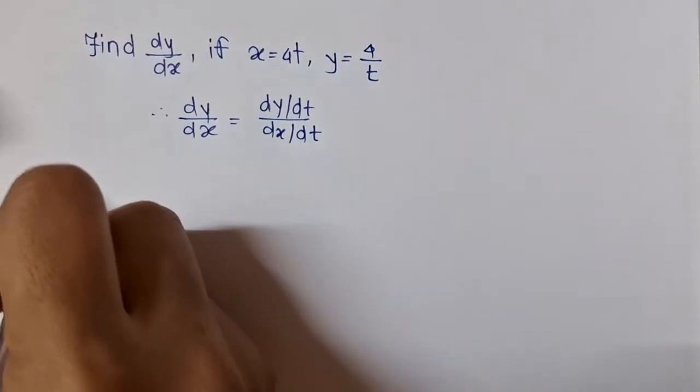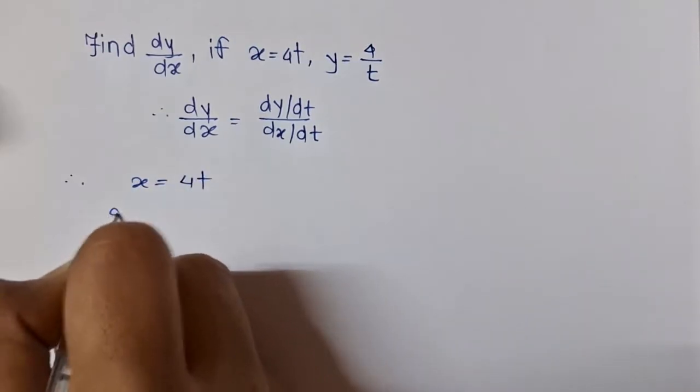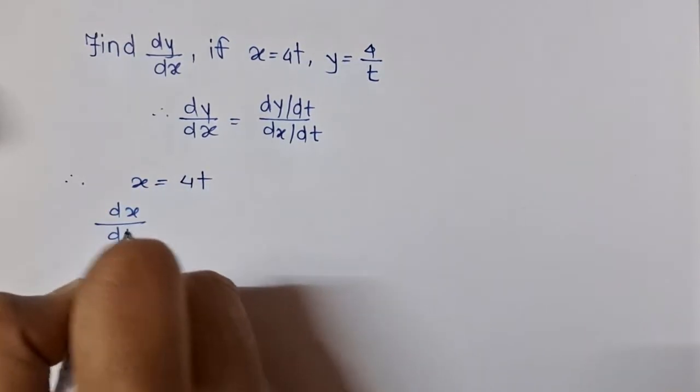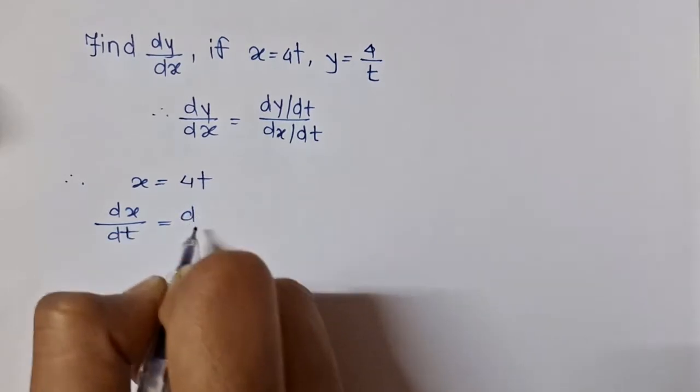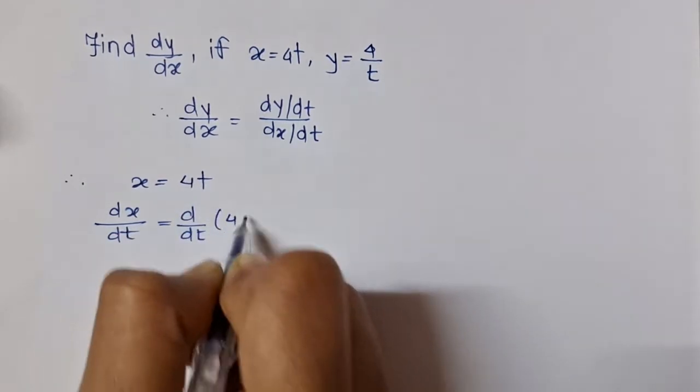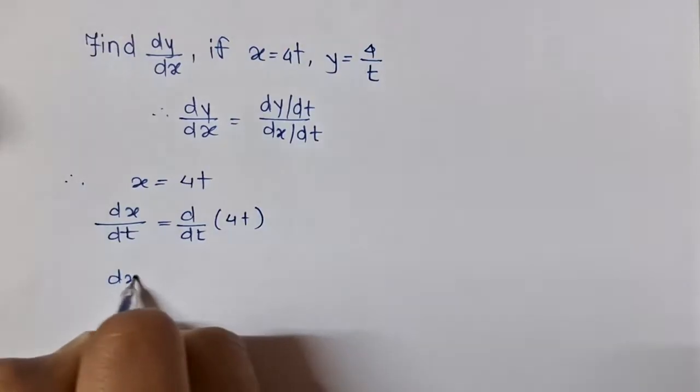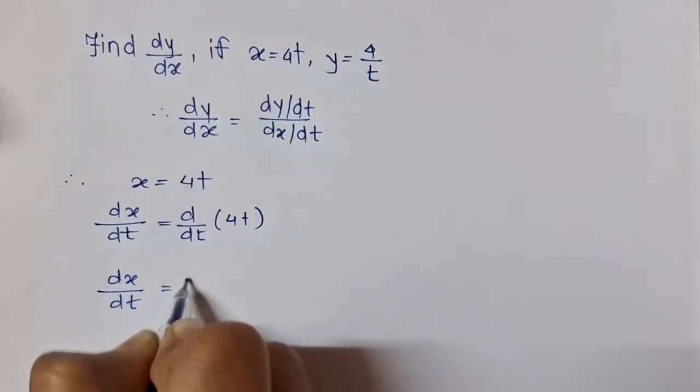So let's get started with x = 4t. First, by differentiating it with respect to t, we get dx/dt = d/dt(4t), and we will have dx/dt = 4.